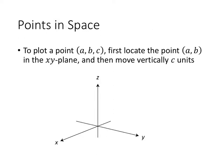First we need to know how to plot a point in space. So if we have a point with three coordinates—an x, a y, and a z coordinate—first we take the first two numbers, the x and the y, locate that point in the xy-plane, and then we move vertically the third number. The z indicates how far up or down we go.